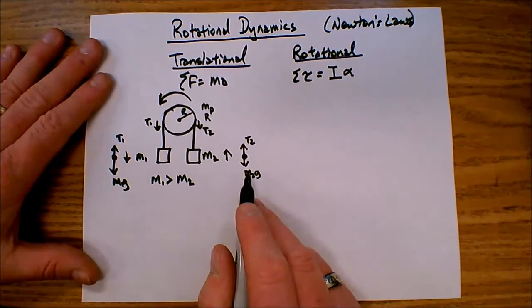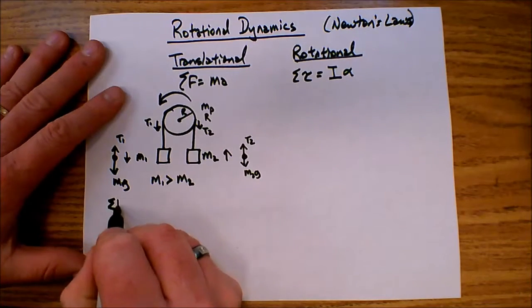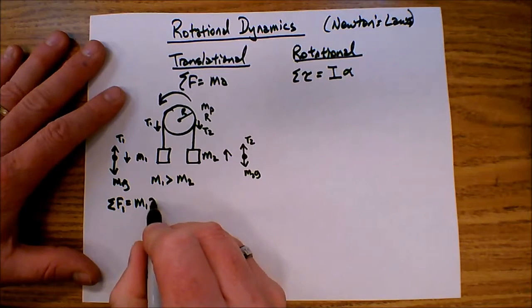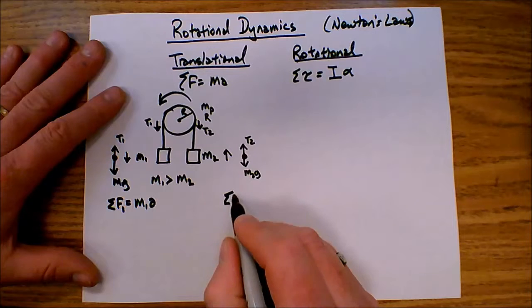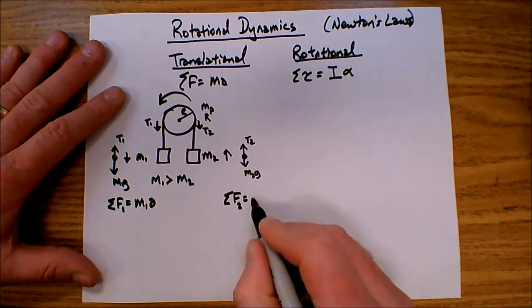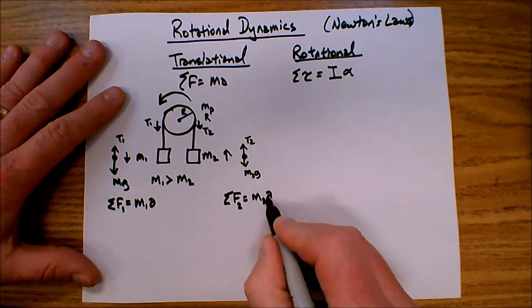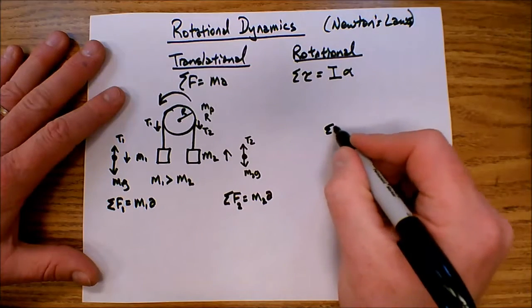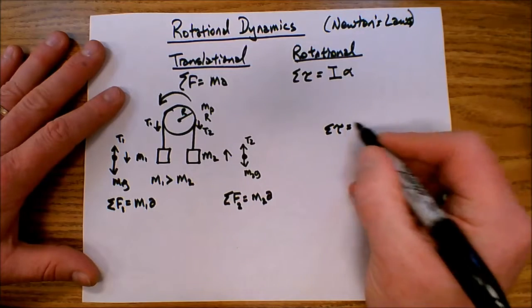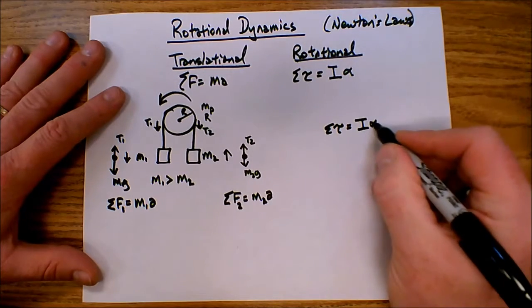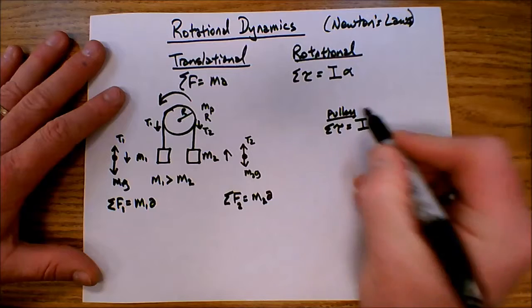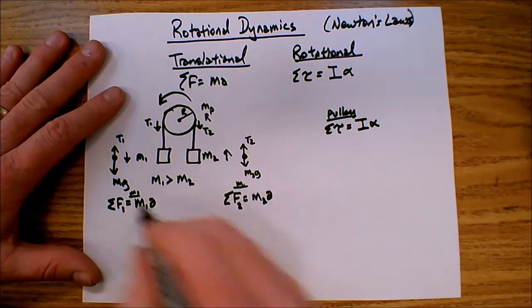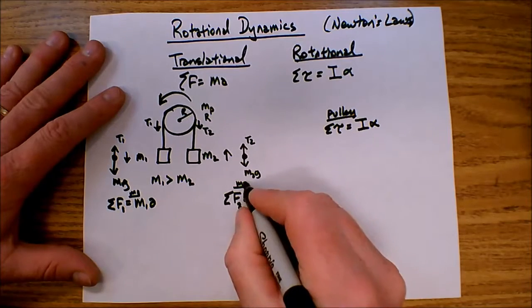So to solve an Atwood's machine problem like this, I'm going to look at net force on object one equals the mass of one times A, and the net force on object two equals the mass of two times A. And then I'm going to look at the net torque on the pulley is equal to the inertia of the pulley times alpha. So this is the pulley, and this is M1, and this is M2.